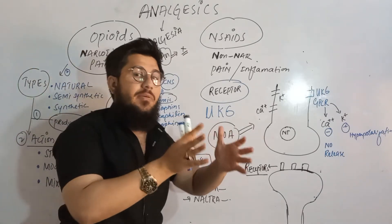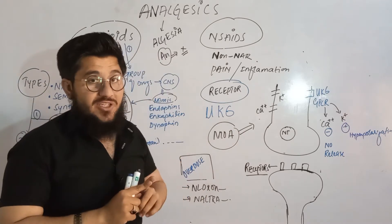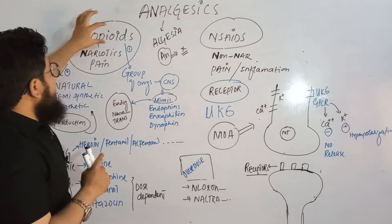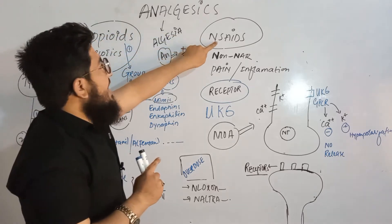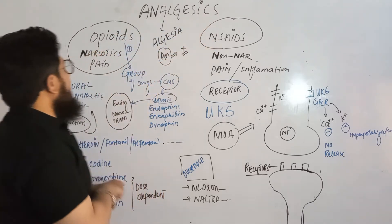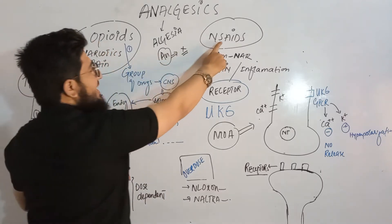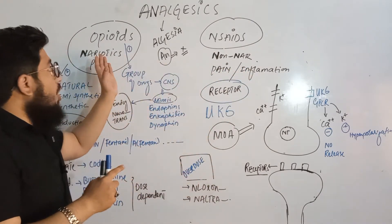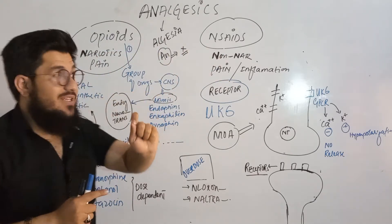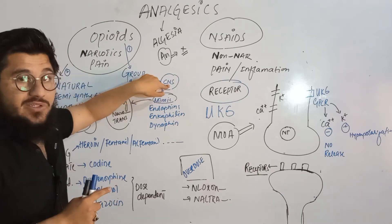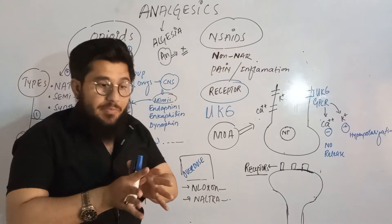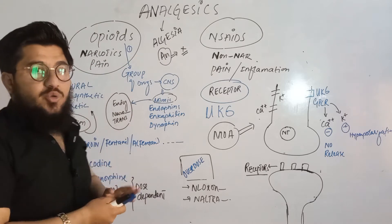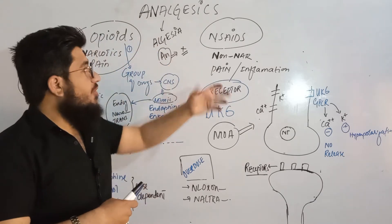We have two types of analgesics: opioid analgesics and NSAIDs. Opioids are also known as narcotics, whereas NSAIDs are non-narcotics. Opioids are only used for relieving pain, whereas NSAIDs relieve both pain and inflammation. Importantly, opioids act on the central nervous system, whereas NSAIDs act peripherally.